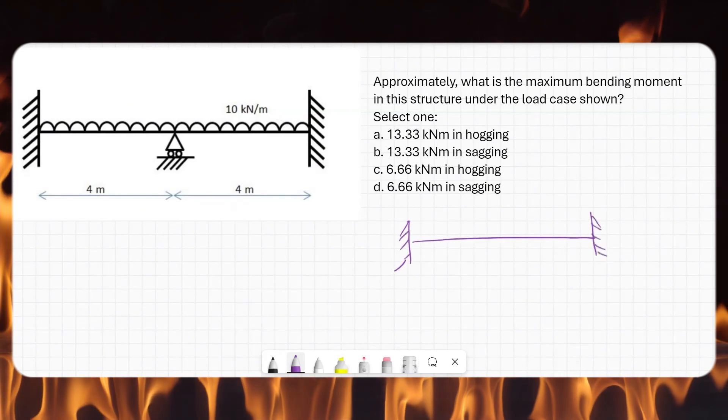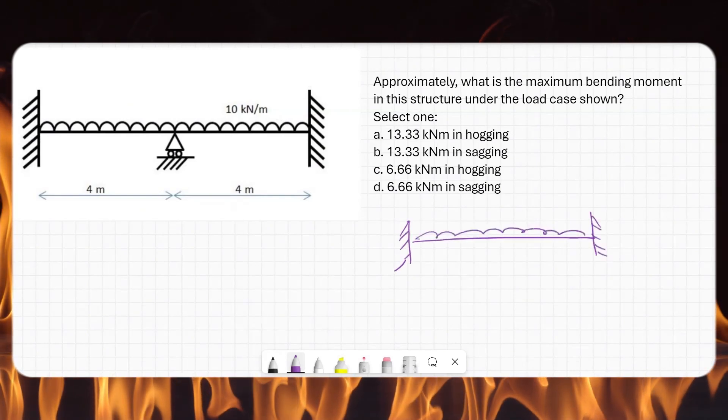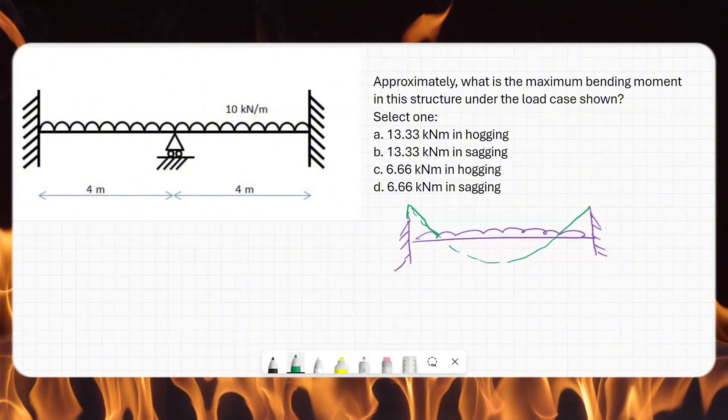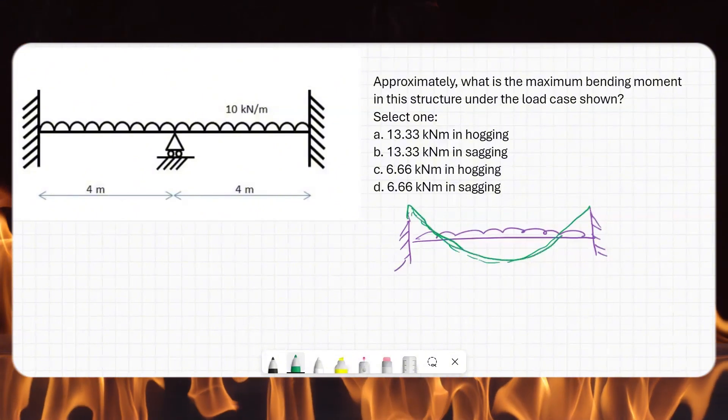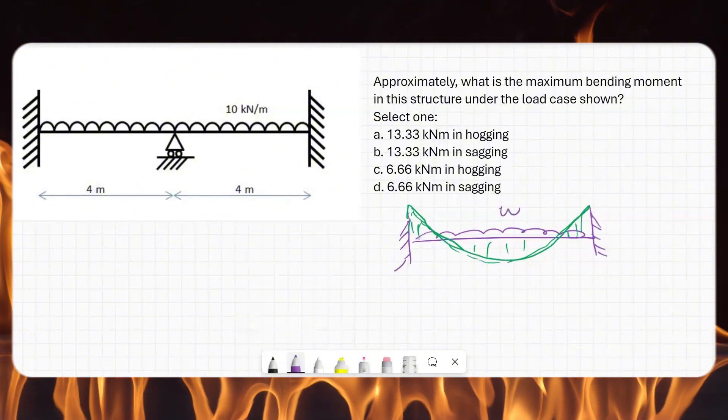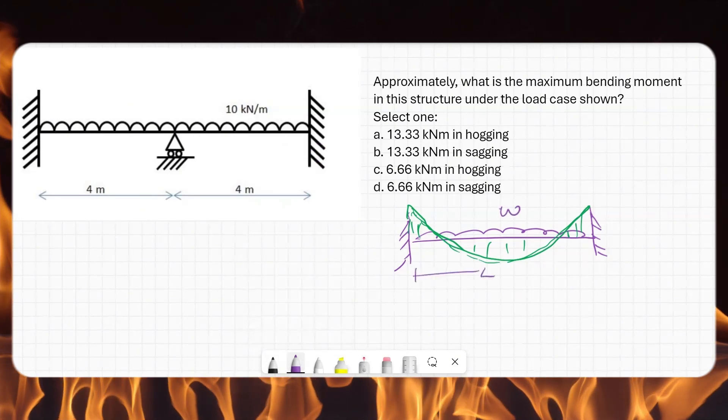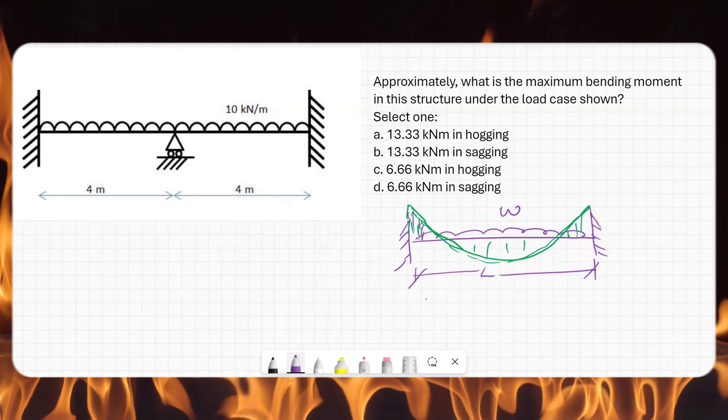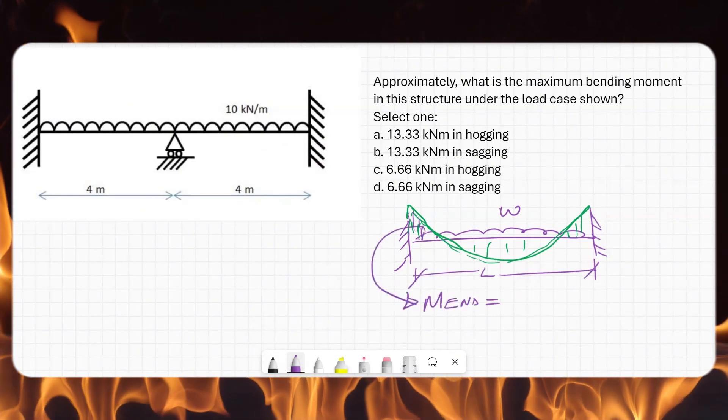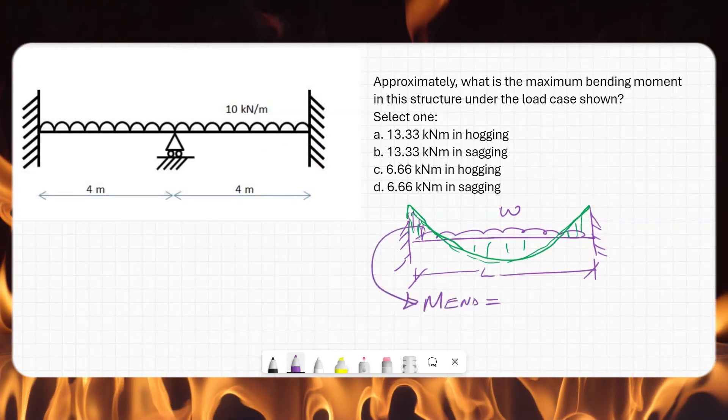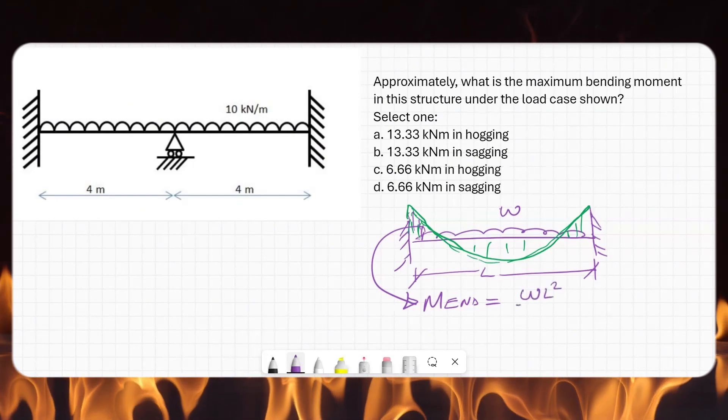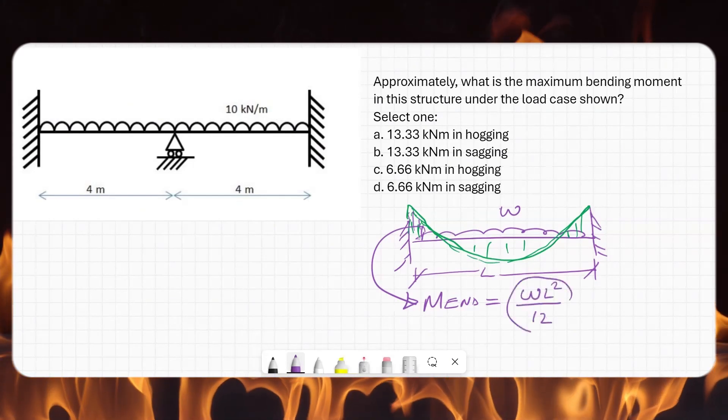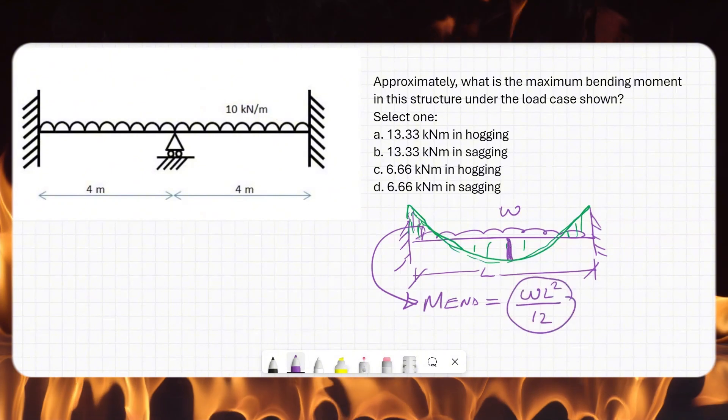When we have a beam with fixed ends, it will have a bending moment like this. Load is w and this is l. The fixed end moment—moment at end—that will be hogging moment.